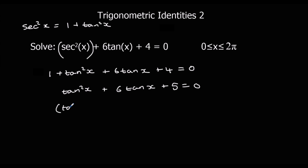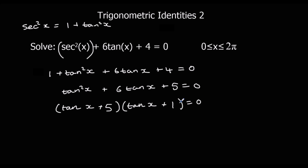We can factorize: tan x in both brackets. What multiplies to make 5 and adds to make 6? We've got 5 and 1, so (tan x + 5)(tan x + 1). That means tan x = −5 or tan x = −1.